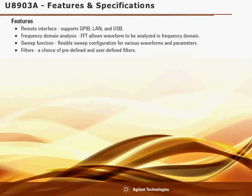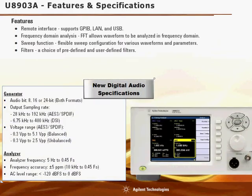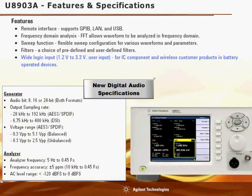Other features of the U8903A Digital Audio Analyzer include a wide DSI logic level range of 1.2 to 3.3 volts. This is important for IC component and wireless customers, as their products are mainly used in battery-operated devices — the lower the logic level, the longer the battery will last. The U8903A's ability to test a wide logic level also allows better margin for designers in terms of specifications and performance for their device under test.